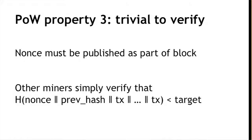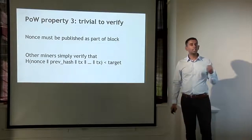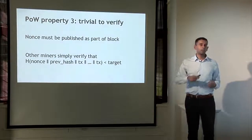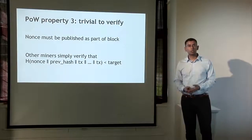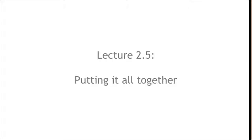The third important property of proof of work is that it's trivial to verify that a node has computed proof of work correctly. Even if it takes a node on average 10 to the 20 tries to find a nonce that satisfies the hash puzzle, that nonce must be published as part of the block. So it's trivial for any other node to look at the block contents, hash them all together, and verify that the output is less than the target. This allows you to get rid of centralization — you don't need any centralized authority verifying that miners are doing their job correctly. Any node can instantly verify that a block found by another miner satisfies the proof-of-work property, thereby confirming that miner put in a lot of computing power. Now let's look at mining economics.